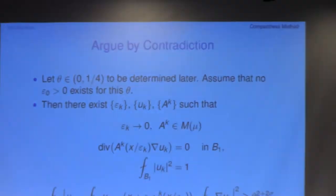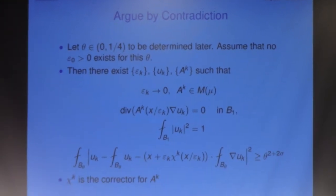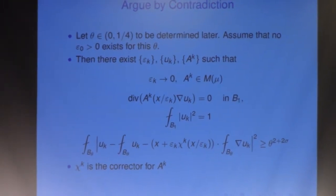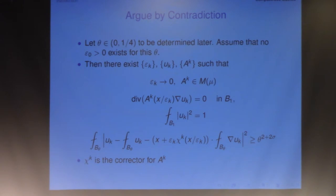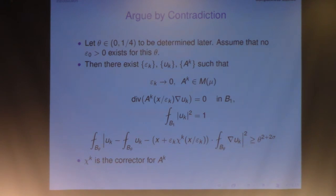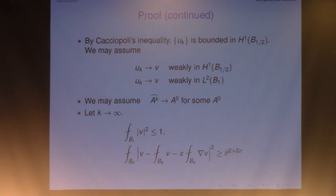So that's the end of the proof. Compactness theorem — basically what this shows is that if the limit is good, your sequence is not too bad. That's the idea. The limit here has C2 regularity, and here we prove the sequence is actually uniformly Lipschitz. So that's the idea.